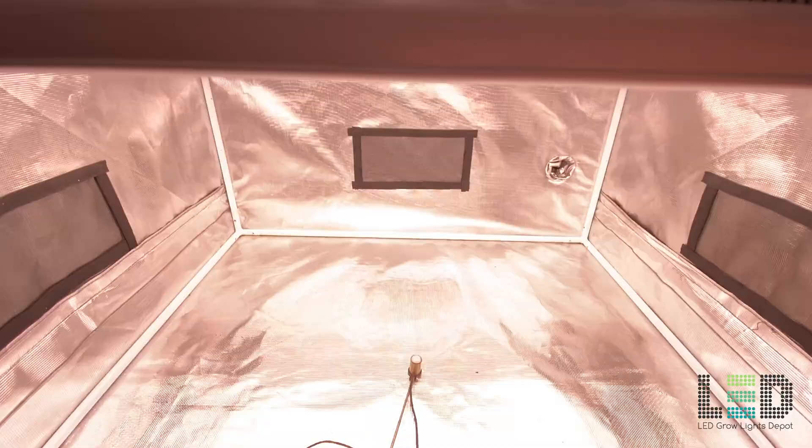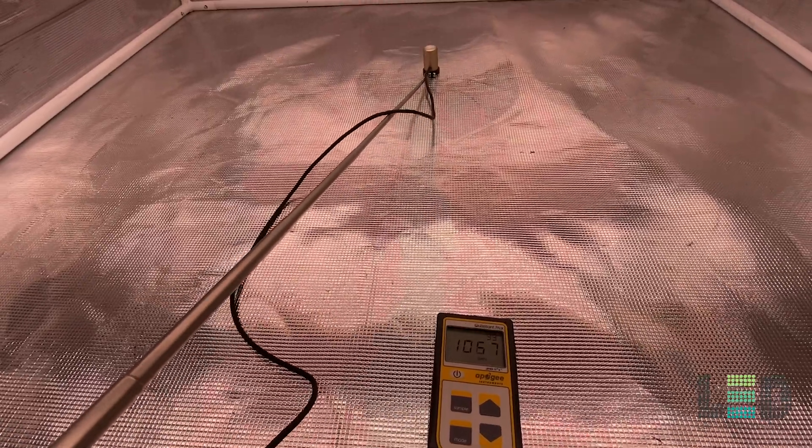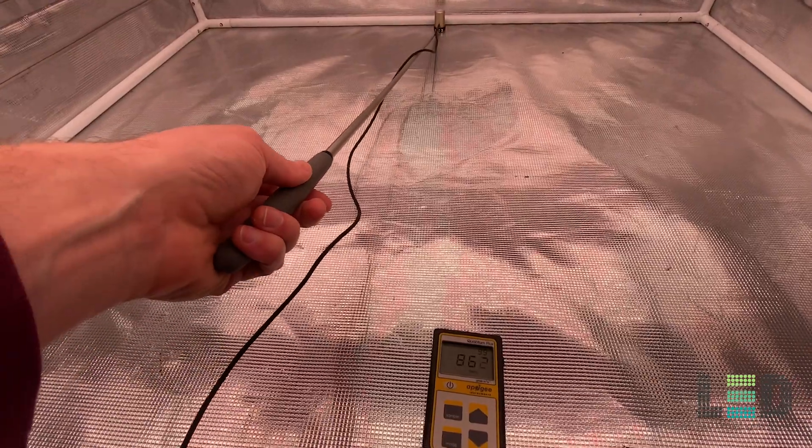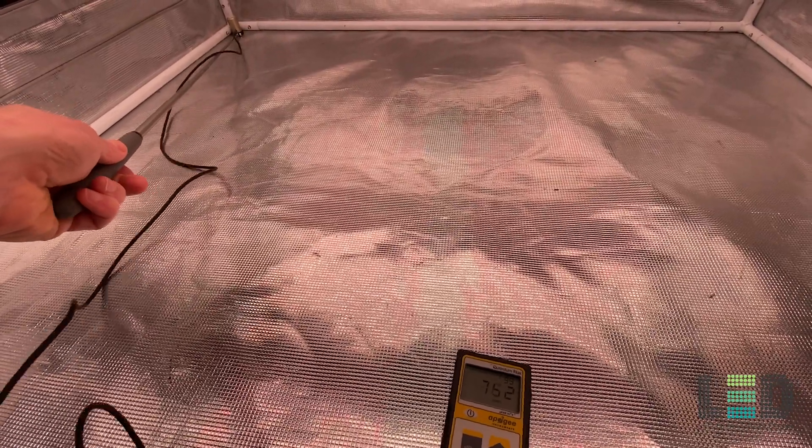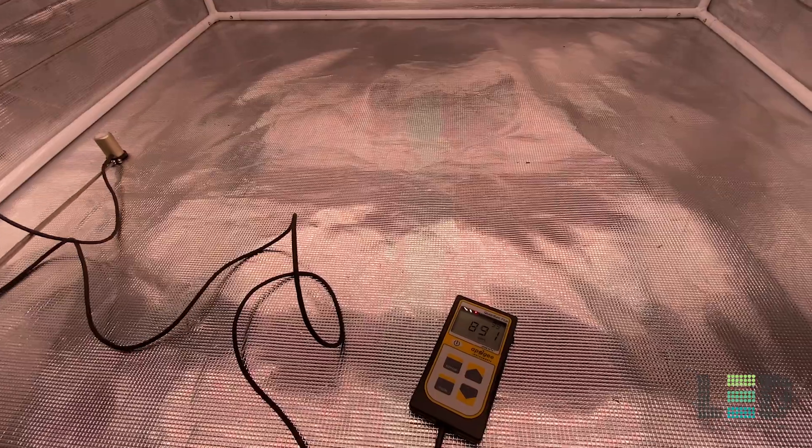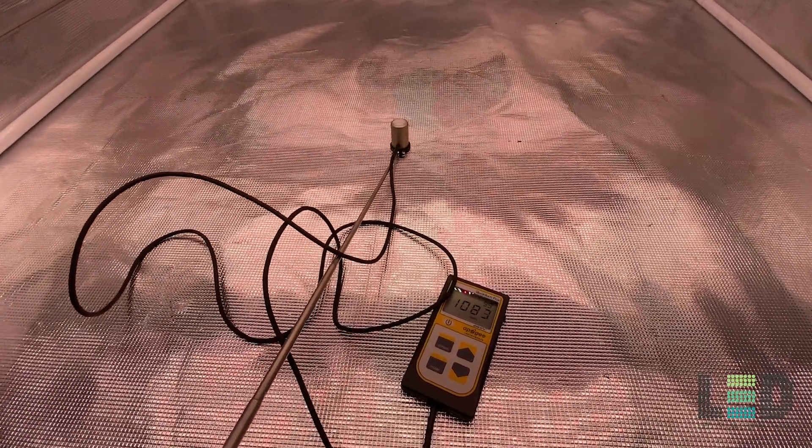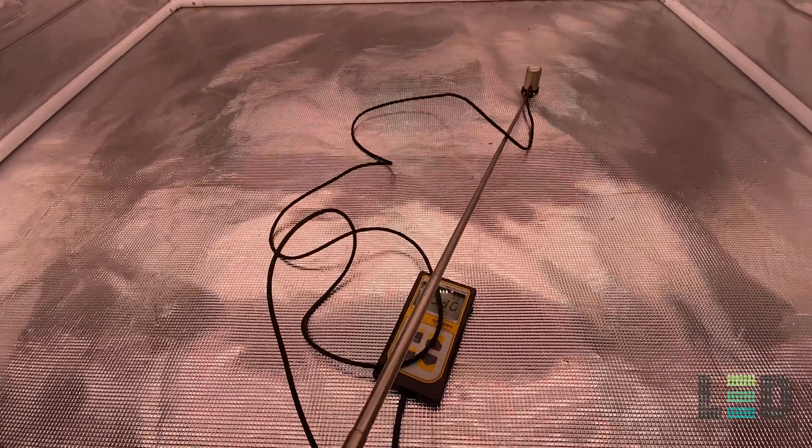And the next reading is at 24 inches, where we're hitting over 1000 PPFD in the middle. And as I move it to the back, you can see that that's going to hold until we get to the back edge, where it drops to around 860. And into the corner, about 746 and the other edge, just about 900. All right, so it's great that we're seeing over 1000 PPFD in most places here. As we move to the back and edges, it's going to drop off. So this would be a fine height for flowering at.